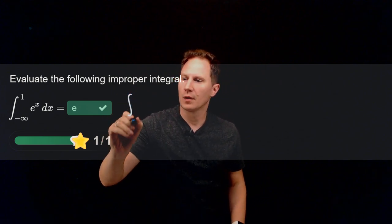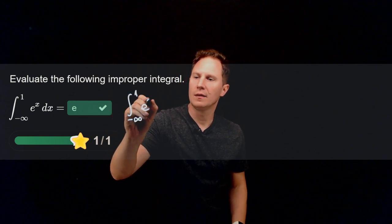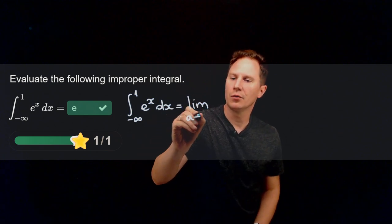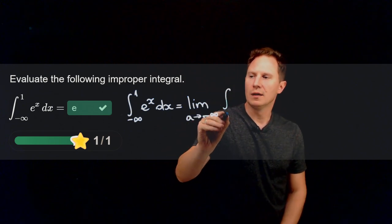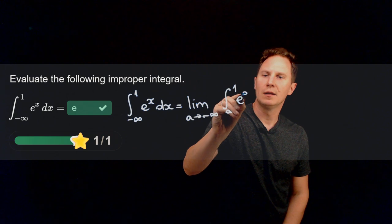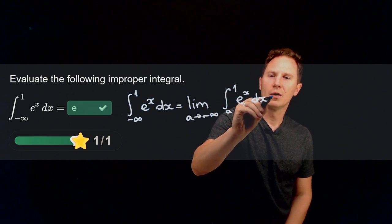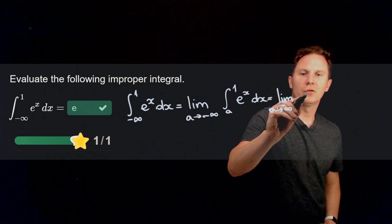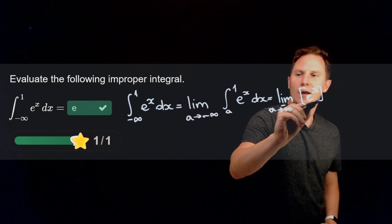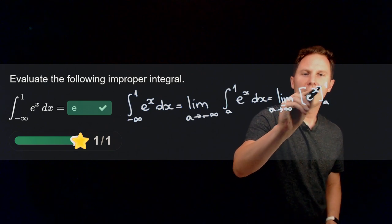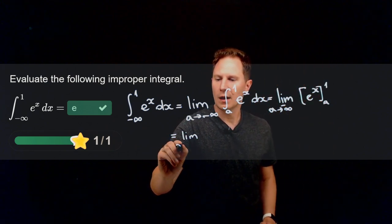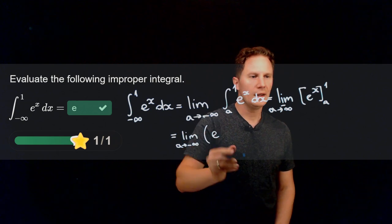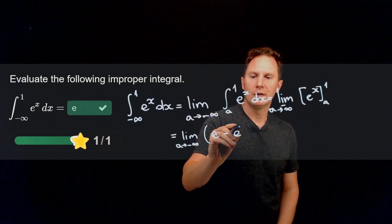Now we can again by definition evaluate this improper integral by taking the limit as a goes to negative infinity of the definite integral from a to 1 of e to the x dx.